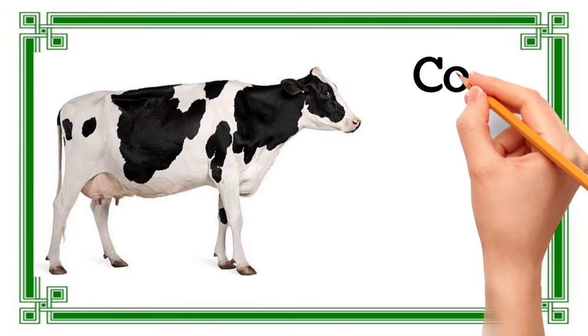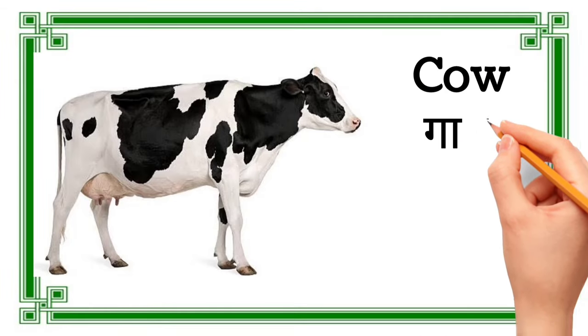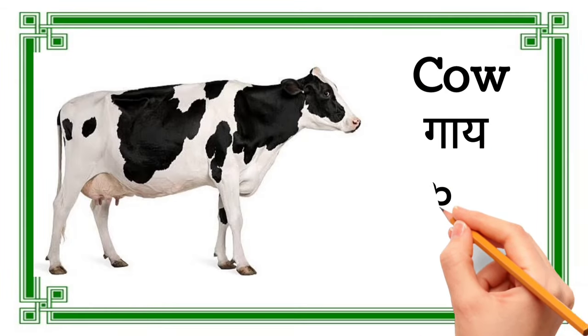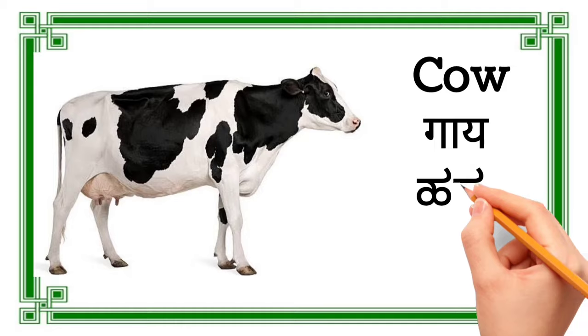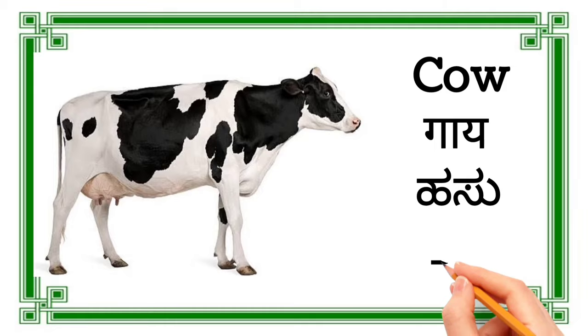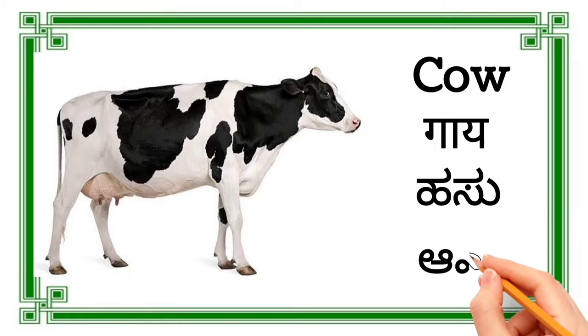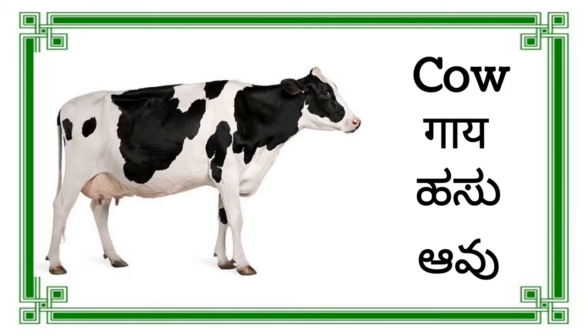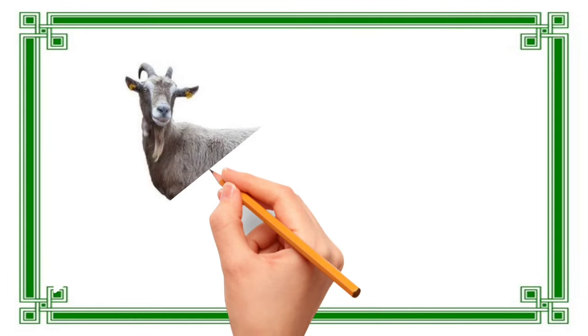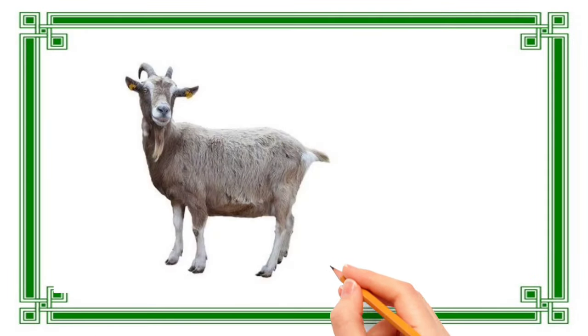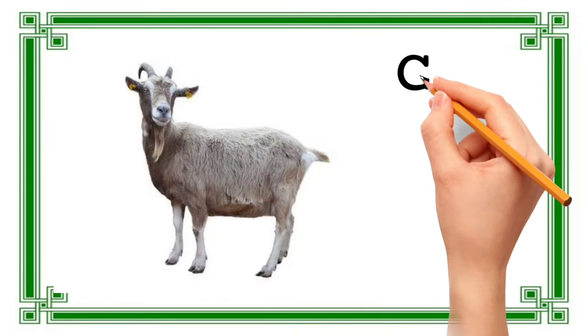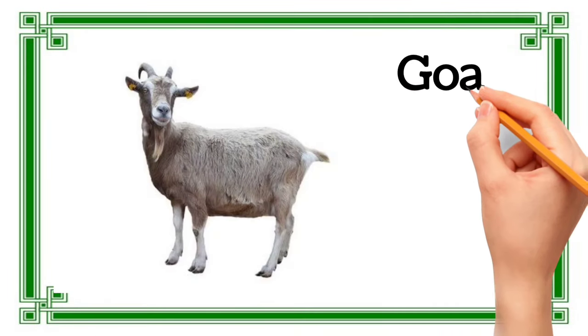Cow — Gai (Hindi), Asu (Kannada), Awu (Telugu).